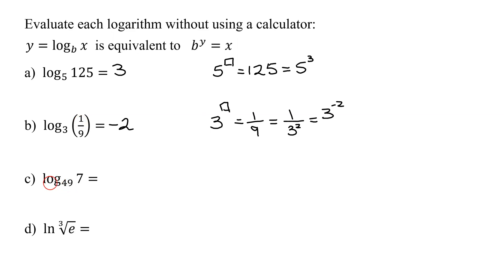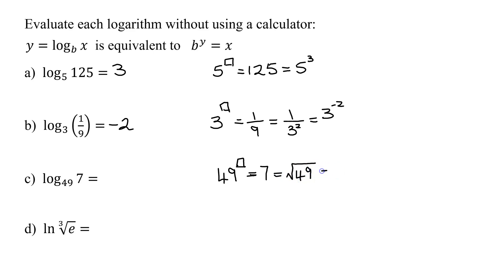Next example: log to the base 49 of 7. We have to ask ourselves, base 49 raised to what power equals 7? What is the relationship between 49 and 7? 7 is equal to the square root of 49. Written as a rational exponent, that's 49 to the 1/2 power. So log to the base 49 of 7 is just equal to 1/2.